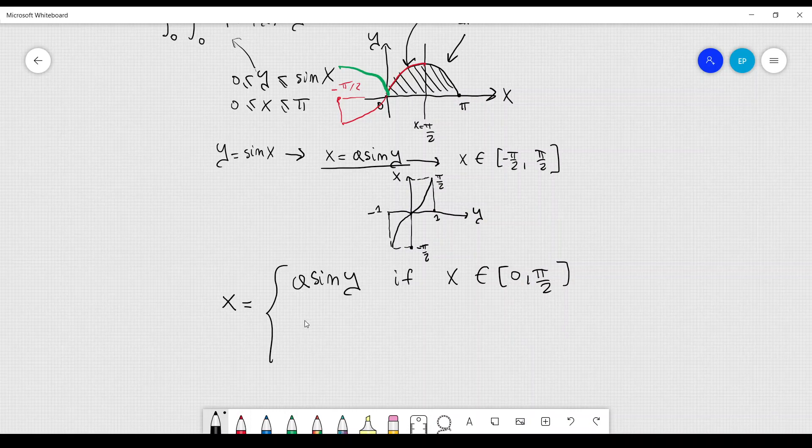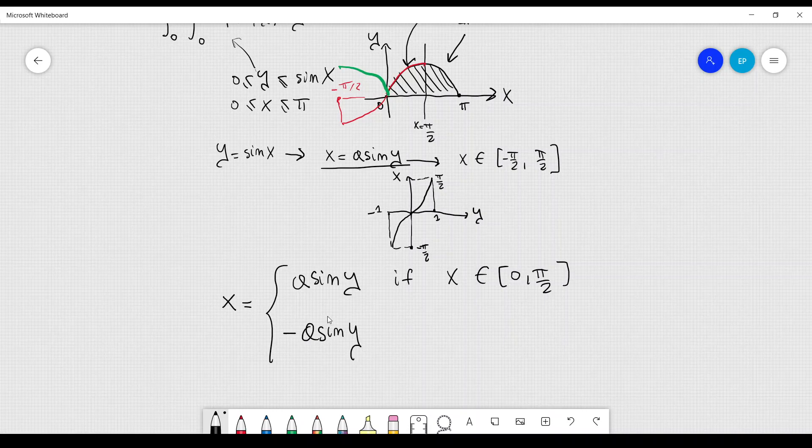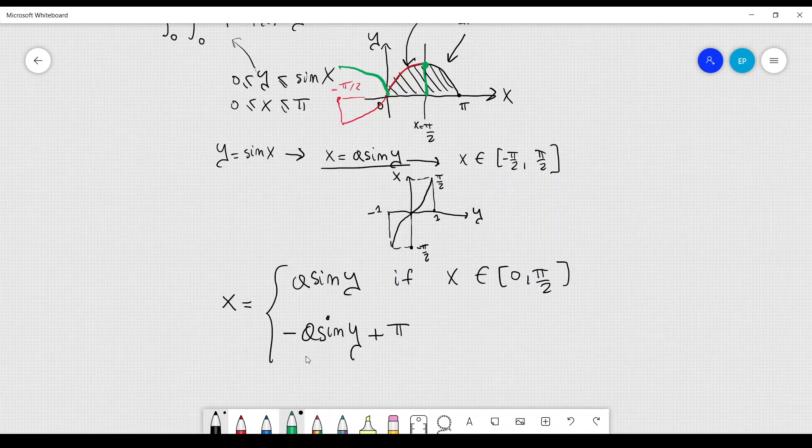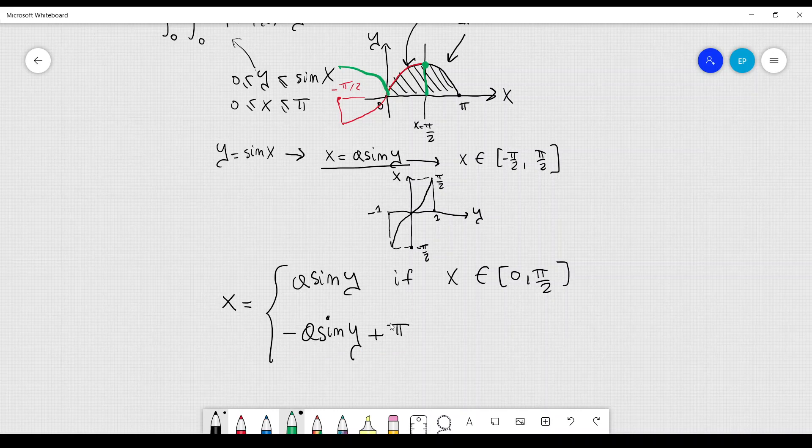Here we can just simply write down minus a sine of y, and then we just simply have to add π. For example, if we set y equal to 1, we are here, and we should get x equal to π over 2. From here, we get, of course, π over 2, because the inverse sine of 1 is equal to π over 2. Whereas here, we get minus π over 2 plus π, which is still equal to π over 2. You can see that this is true.